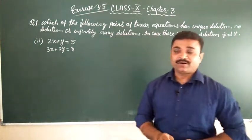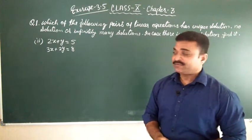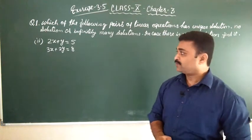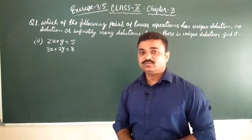Students, in the second part of question number 1, it is given that 2x plus y is equal to 5 and 3x plus 2y is equal to 8.